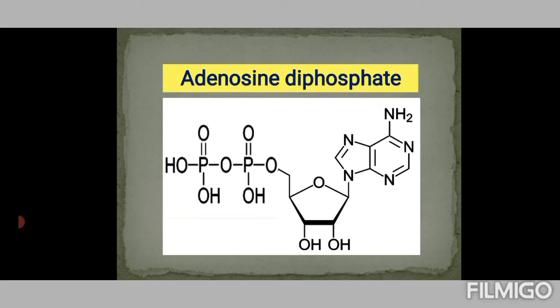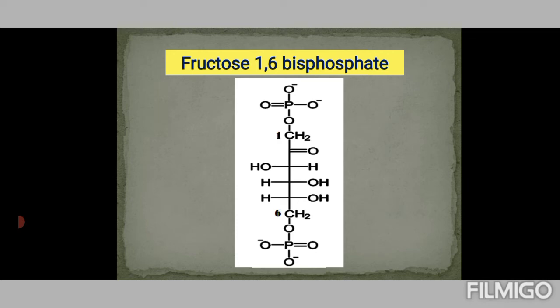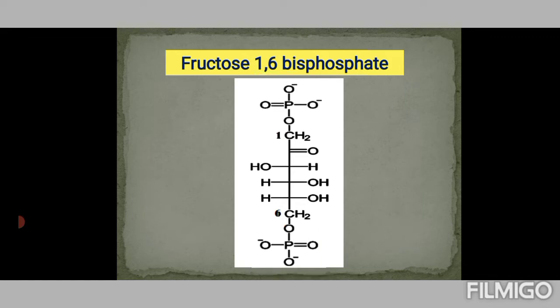Whereas the example for a bisphosphate is fructose 1,6-bisphosphate. It has two phosphate groups: one attached to the first carbon and the other attached to the sixth carbon, making it a bisphosphate. Other examples include ribulose 1,5-bisphosphate and fructose 2,6-bisphosphate.